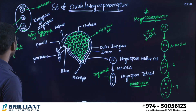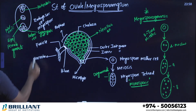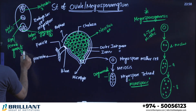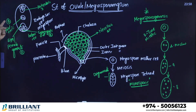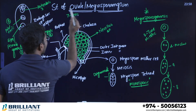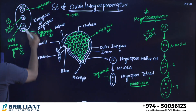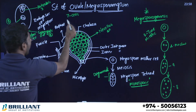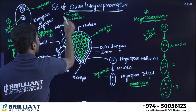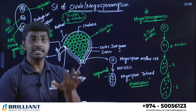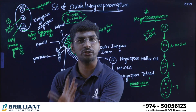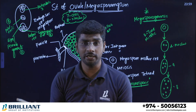Now let's count the cells and nuclei in the mature embryo sac. Cells: three antipodals + two synergids + one egg + one polar nuclei cell = seven cells total. Nuclei: counting all nuclei including the two polar nuclei = eight nuclei total. This is a very common exam question. All cells in the mature embryo sac are haploid.